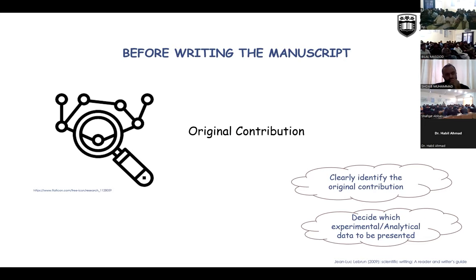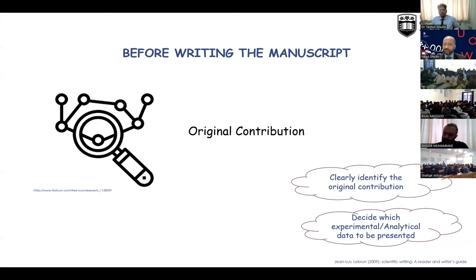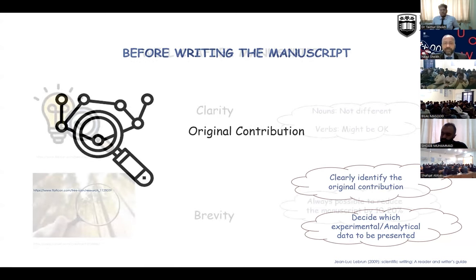Every article, even a short one, must have original contribution. If you have clearly defined original contribution, then you can write. In a PhD or project, we might write more than one journal article, so we decide which experimental or analytical investigation goes into which article. But every article must have original contribution — without it, it won't be published.